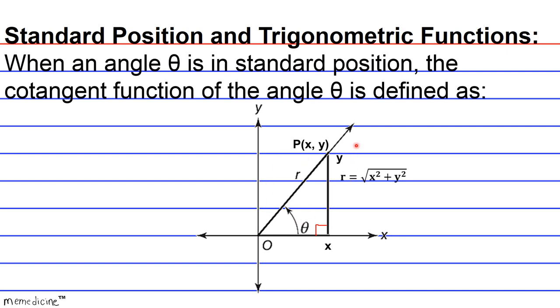And now that we've established these points for a standard position, this makes finding all trigonometric values very easy, whether it's sine, cosine, tangent, or even cotangent. So now let's establish what the cotangent of any angle theta drawn in standard position is going to be.